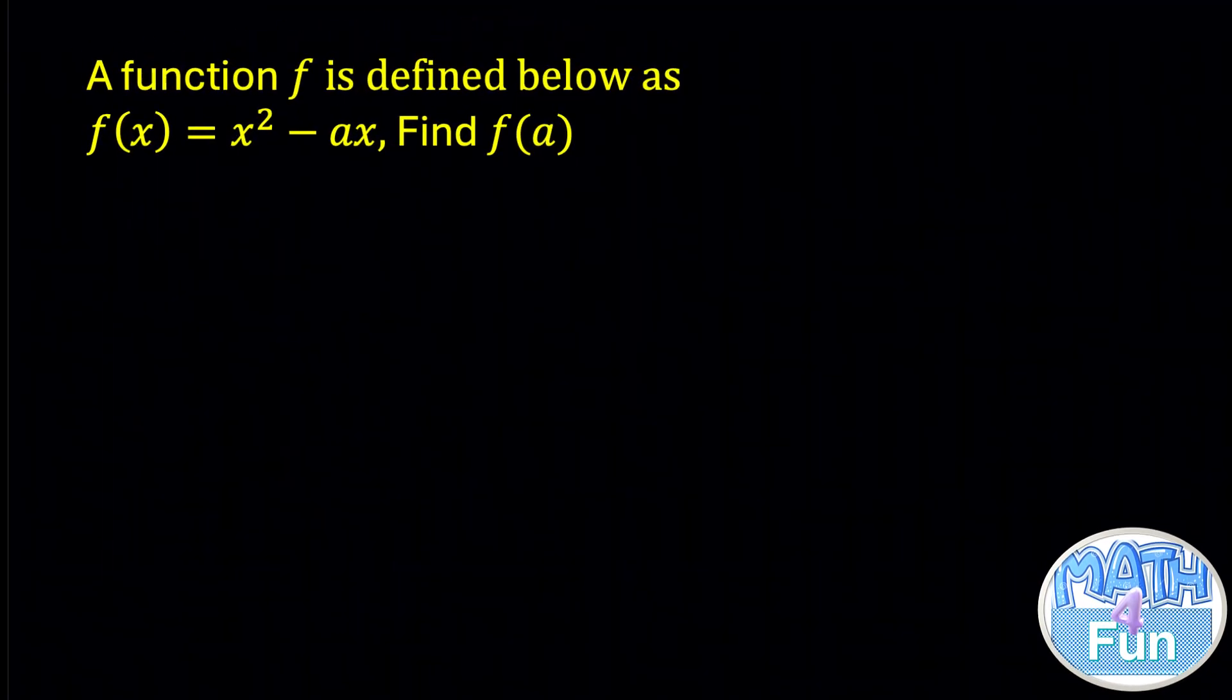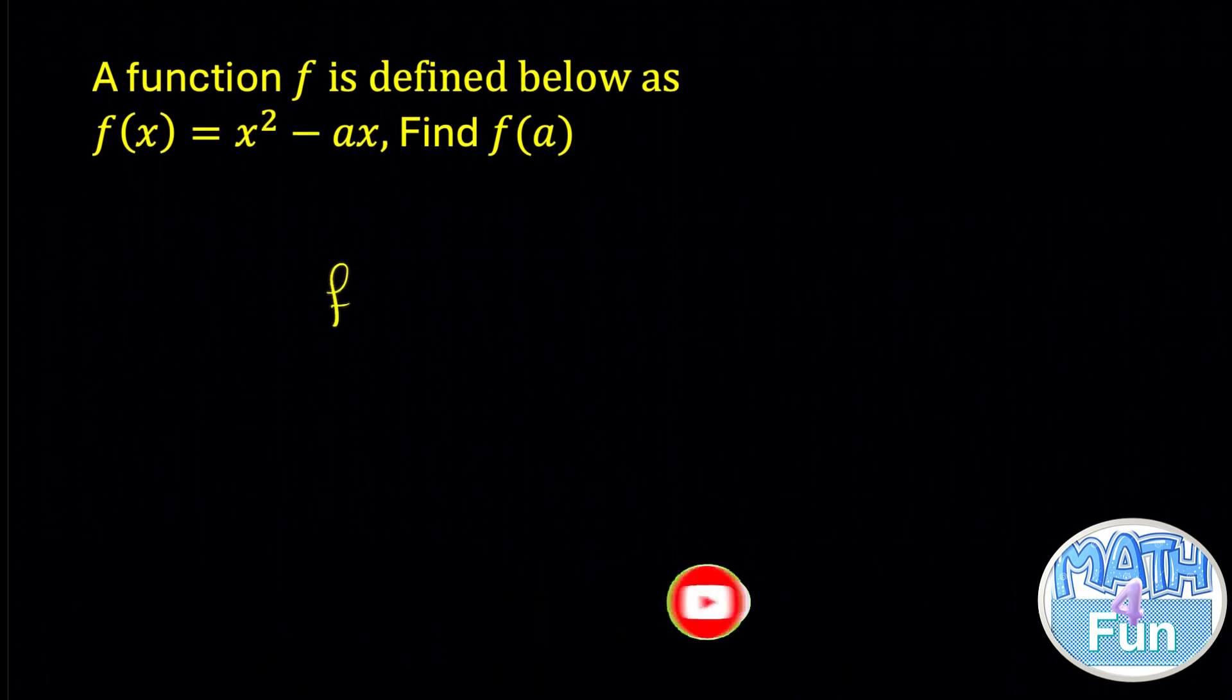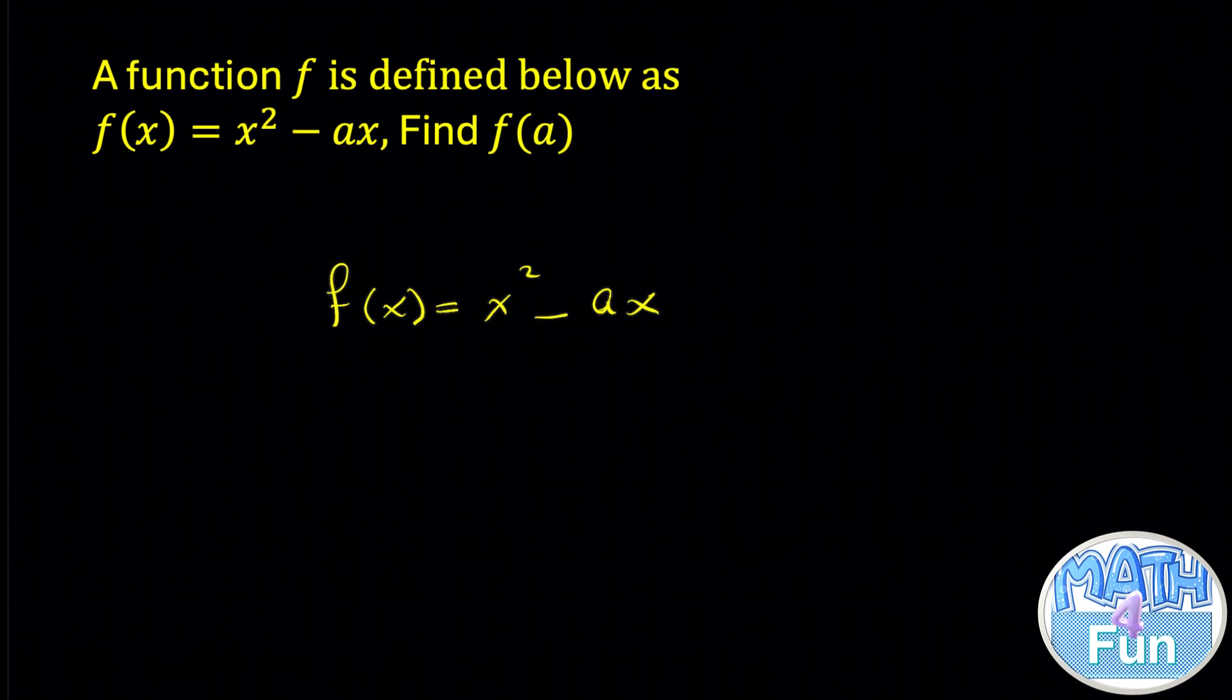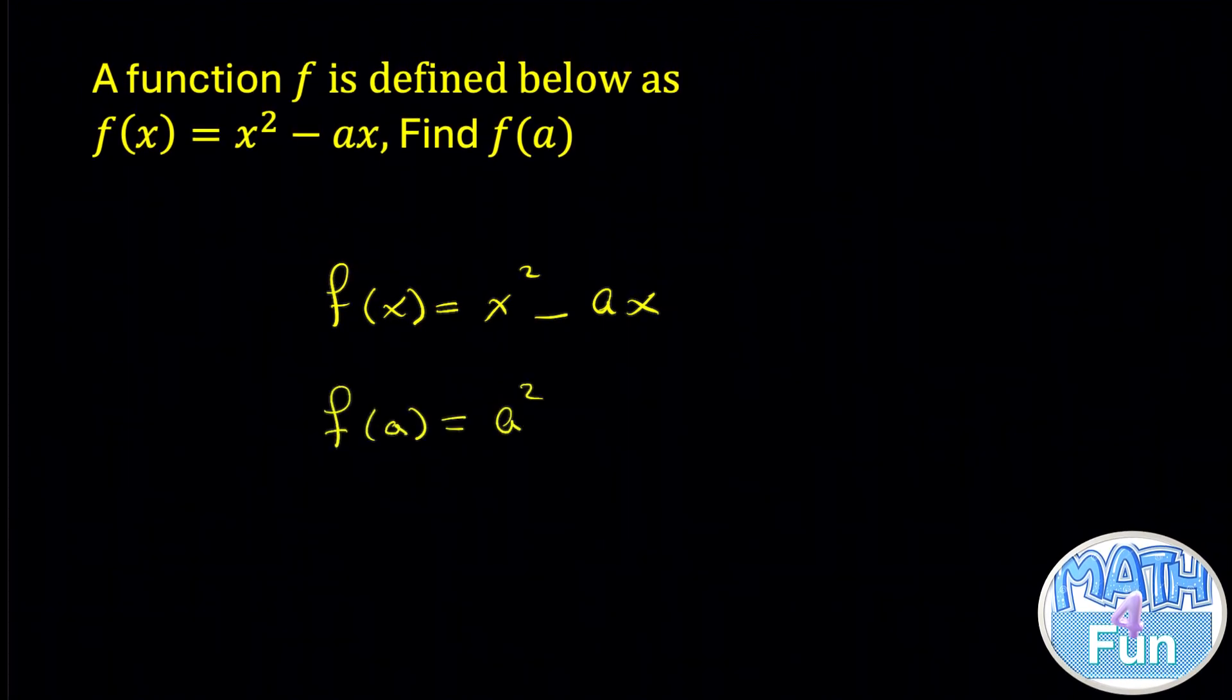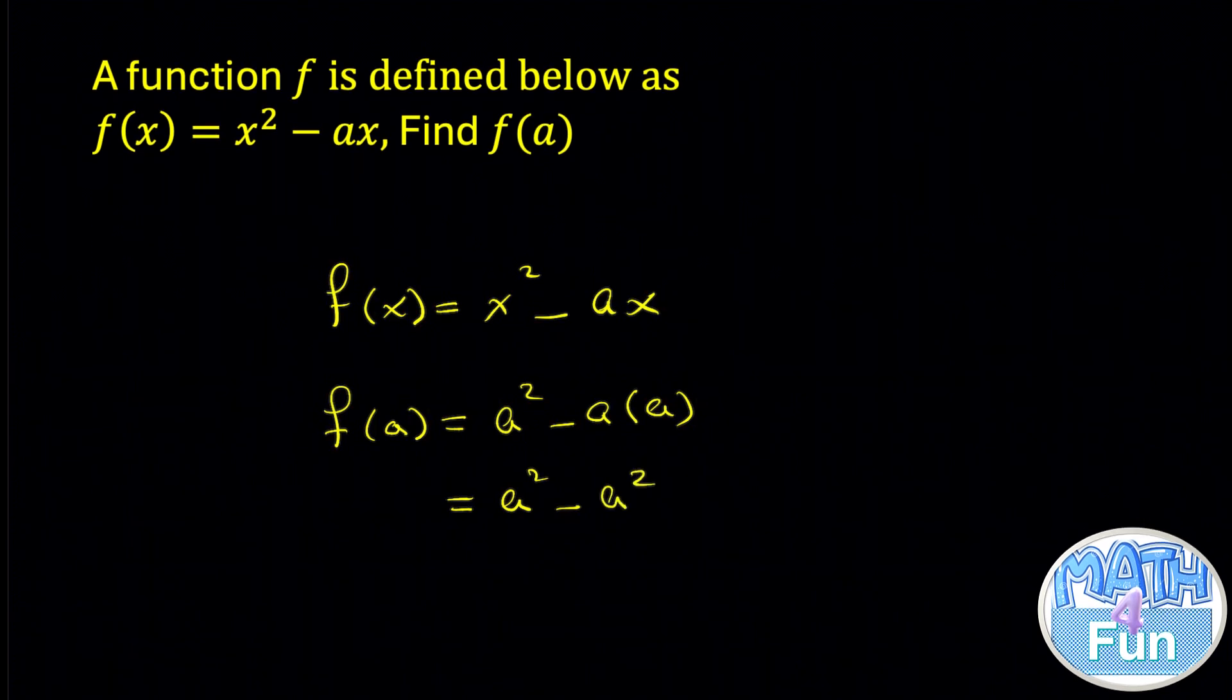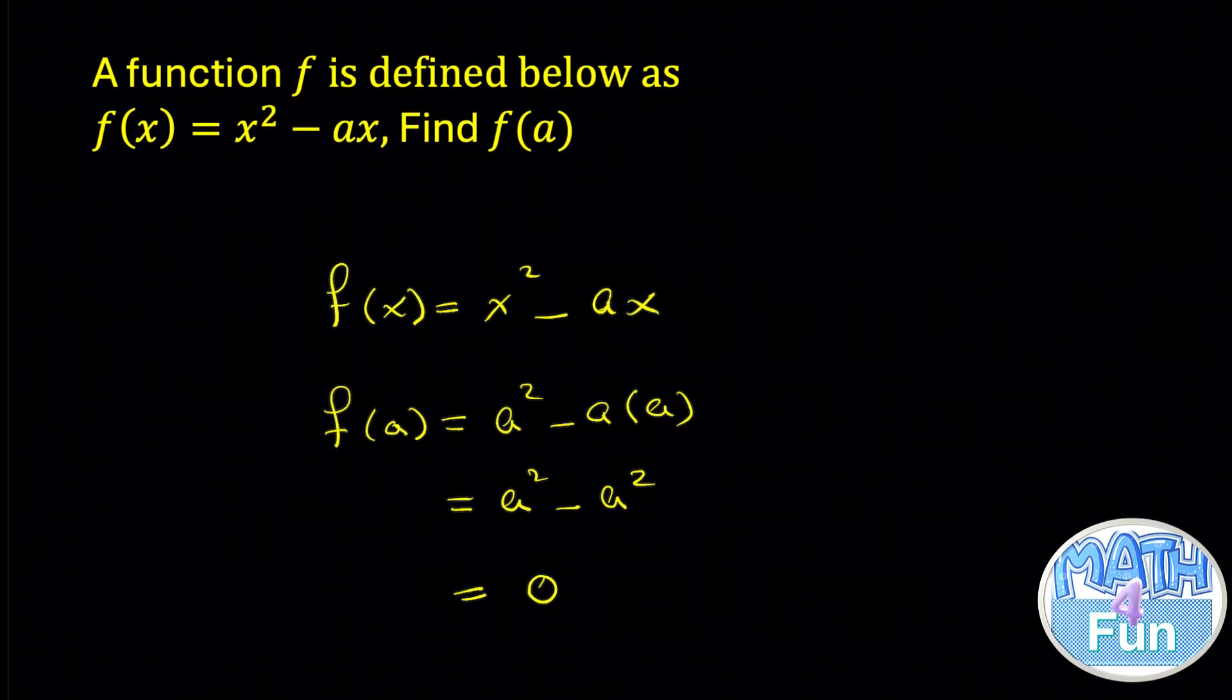Here we have a function f is defined below f of x equal to x squared minus ax. They said find f of a. If f of x is equal to x squared minus ax. To find f of a replace x by a so we have f of a is equal to a squared minus a into a which is equal to a squared minus a times a which is a squared also a squared minus a squared you get 0 and that is a straightforward question.